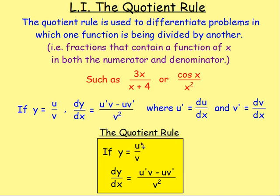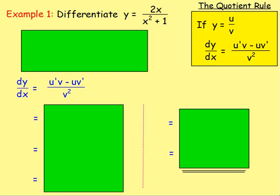Note: u is going to be the function on the top, and v is going to be the function on the bottom. Where you can mix them up with the product rule and it makes no difference, you can't do that with the quotient rule. So let's try some examples.